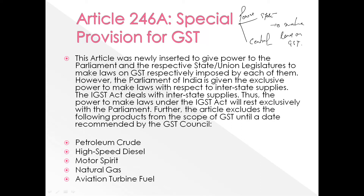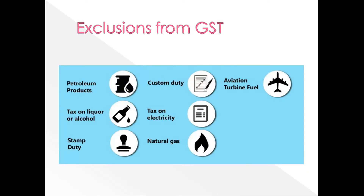However, Parliament has been given exclusive power to make law with respect to interstate supplies — that is, IGST. IGST applies to interstate supplies, where earlier CST was applied. The power to make laws under IGST rests exclusively with Parliament. The article also excludes certain products from the preview of GST: petroleum products, aviation turbine fuel, liquor or alcohol, electricity, natural gas, and stamp duty.